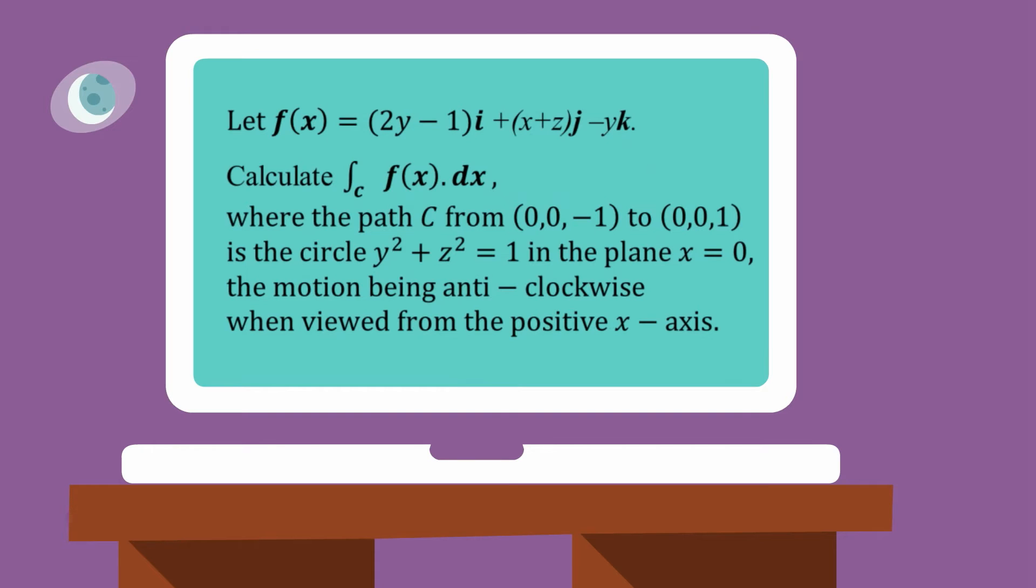Okay, so what does this mean? This means that we input a vector, bold x, and that is the position on the curve. And that spits out another vector, which we work out from calculating 2y minus 1 and x plus z and negative y. So let's have a look at what that looks like.